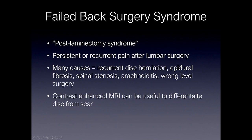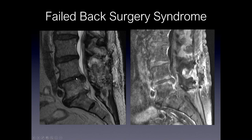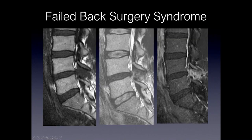Failed back surgery syndrome, otherwise termed post-laminectomy syndrome, is persistent or recurrent pain after lumbar surgery. There are many causes including recurrent disc herniation, epidural fibrosis, spinal stenosis, arachnoiditis, and wrong level surgery. Contrast enhancement is particularly helpful in differentiating recurrent disc from scar. In one example, what looks like a significant disc herniation after laminectomy shows peripheral enhancement on post-contrast imaging, consistent with disc. In another example, a protrusion that looks like a disc herniation shows clear enhancement on post-contrast imaging, consistent with epidural scar or fibrosis.